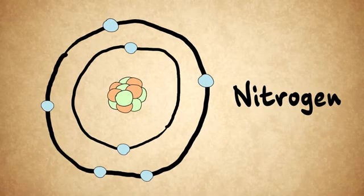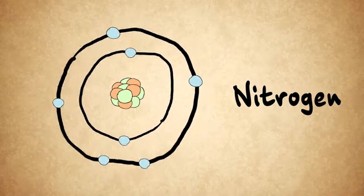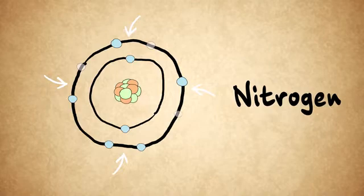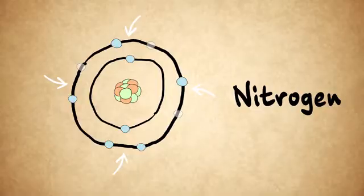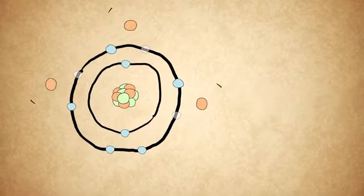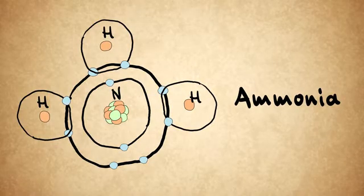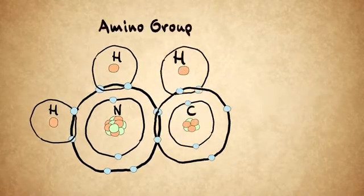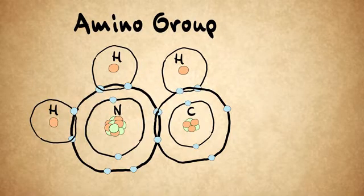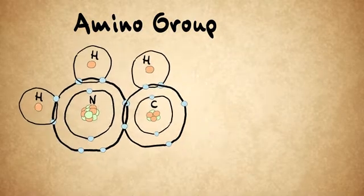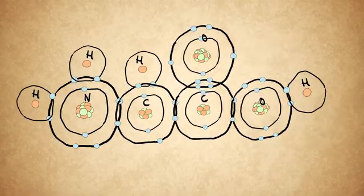Nitrogen has five electrons in its outer shell. Here's how we count them: there are four placeholders, each wants two atoms, and like people getting on a bus, they prefer to start out not sitting next to each other. They really don't double up until they have to. So we count it out — one, two, three, four, five. For maximum happiness, nitrogen bonds with three hydrogens forming ammonia, or with two hydrogens sticking off another group of atoms, which we call an amino group. And if that amino group is bonded to a carbon that is bonded to a carboxylic acid group, you have an amino acid.